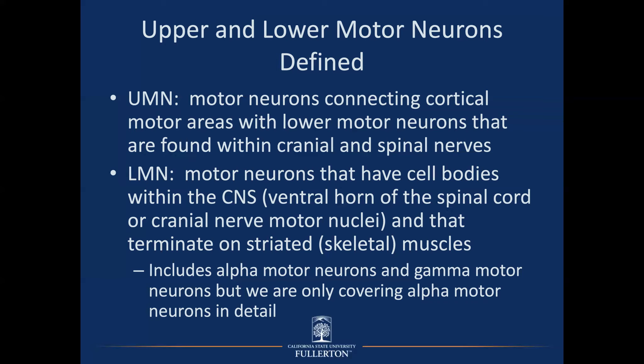I've pared this lecture down with one goal in mind: just giving the amount of information needed to actually solve clinical problems — no extra facts for the sake of facts. Upper motor neurons connect from cortical areas to lower motor neurons found in the cranial nerves and spinal nerves. Not all cranial nerves have lower motor neurons, but most of them do.